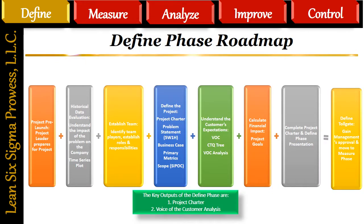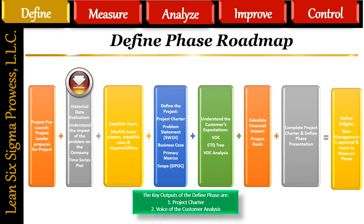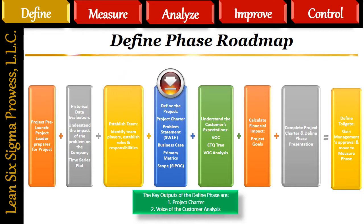The Define Roadmap is a summary of all of the steps required to complete the Define phase. Step 1: Project Pre-Launch — the Project Leader prepares for the project. Step 2: Historical Data Evaluation — understand the impact of the problem on the company; a time series plot is used to understand the trends of the data. Step 3: Establish Team — identify team players, establish team roles and responsibilities. Step 4: Define the project — the team will begin to create the first four elements of the project charter: problem statement, created using the 5W1H tool, business case, primary metrics, and scope, created using the SIPOC tool.